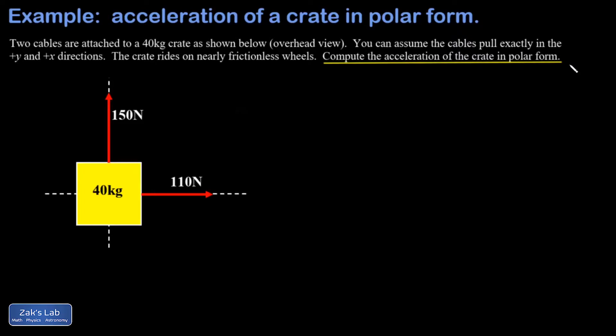of the acceleration and the direction. Step one is to find the net force on the crate. These two forces are vectors and they add vectorially, which means head-to-tail vector addition. We arrange them head to tail like this, and the net force points from the tail of the first to the head of the second.